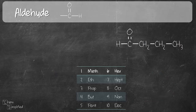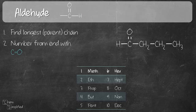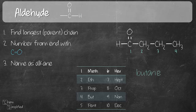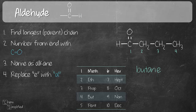Moving on to aldehyde. We do the same as before: find the longest chain — four carbons. Number from the end with C double bond O, starting left to right. Name it as an alkane — four is butane. Then slash out the E and replace it with A-L. The name is butanal. One word of caution: please don't confuse butanal with butanol. A-L indicates aldehyde; O-L indicates alcohol. Pay attention to that distinction.